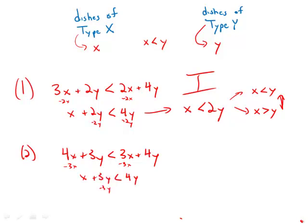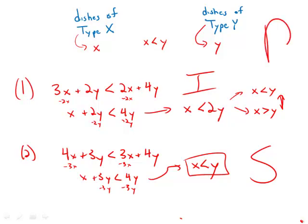Subtracting 3y gives us x < y. This is exactly the statement we're looking to verify, so statement two provides sufficient information to deduce this. Statement one is not sufficient, statement two is sufficient, so the answer is B.